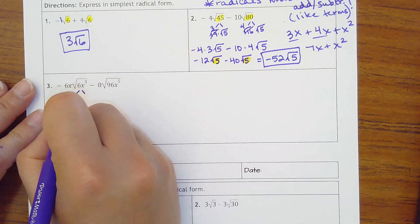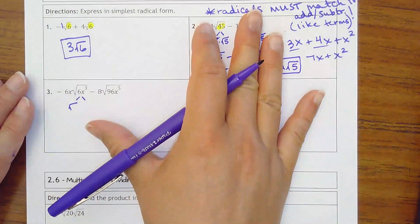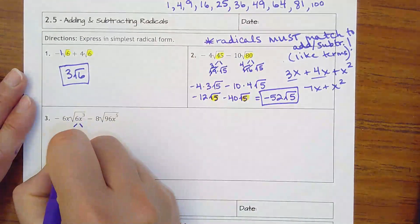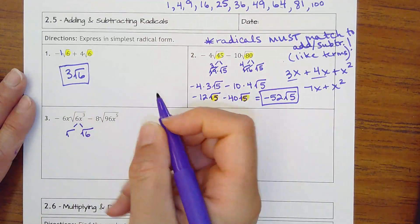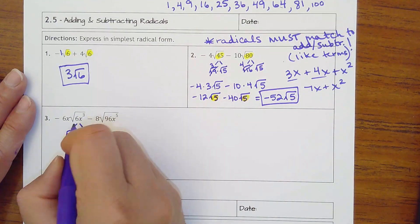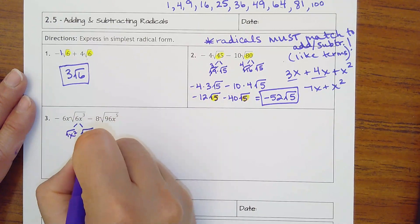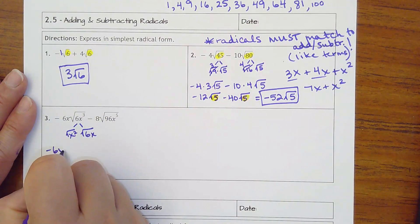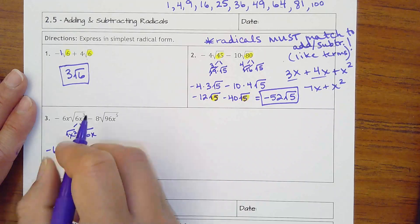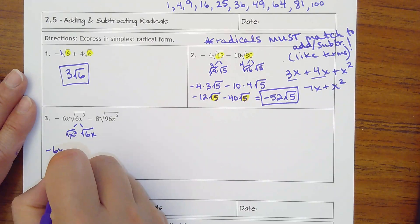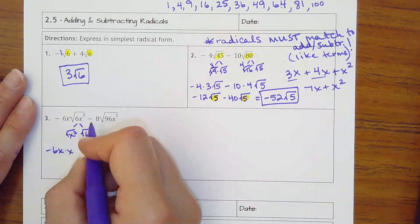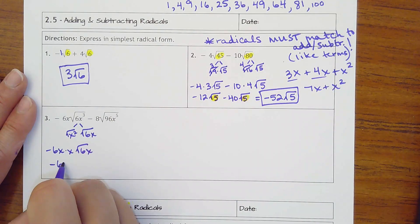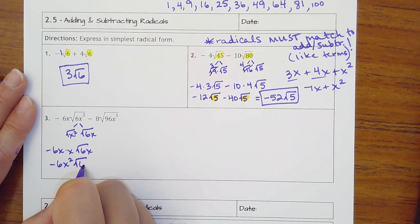Square root of 6 cannot be divided by any numbers on our list. 6 is not a perfect square, nor does it have one in it. x cubed needs to go down to x squared with a leftover x. So this is negative 6x times x, because the squared and square root cancel, times square root of 6x, which becomes negative 6x squared square root of 6x.